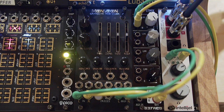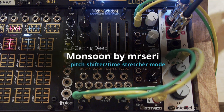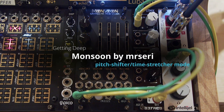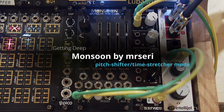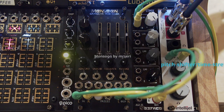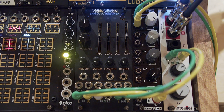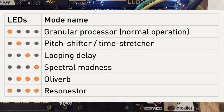This is part two of my Mr. Series Monsoon Deep Dive, where I'm going to cover modes two through six, which are Pitch Shifter, Time Stretcher, Looping Delay, Spectral Madness, and the Parasites editions of Olive Herb and Resonester.